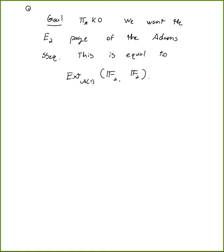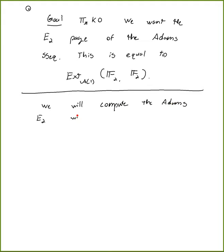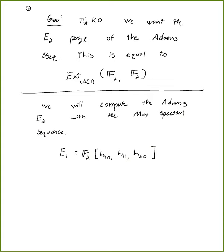To apply the May spectral sequence, we figure out the E1 page. We're using A(1) instead of the whole Steenrod algebra, which cuts down the possible generators significantly. The E1 page is just polynomial in H_{10}, H_{11}, and H_{20}. There are only three generators. They live in degrees: |H_{10}| = (t−s, u) = (0,1,1), |H_{11}| = (1,1,1), and |H_{20}| = (2,1,1), written in (t−s, s, u) coordinates.